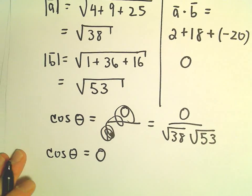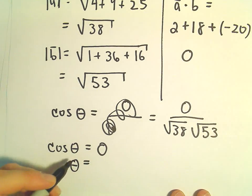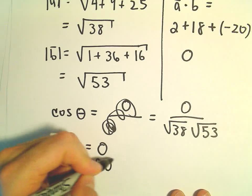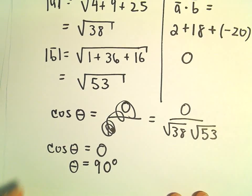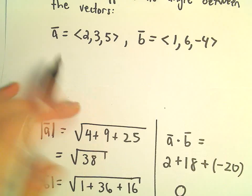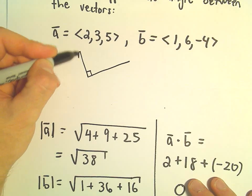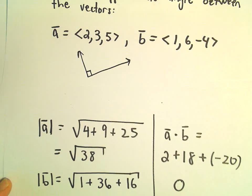So we have cosine of theta equals 0. Well, this is going to give us the angle pi over 2, or 90 degrees. So what that tells us is actually these two vectors are perpendicular. They're going to be crossing at a nice right angle if we place them next to each other.